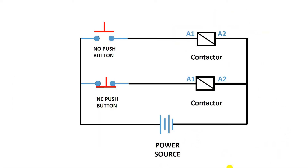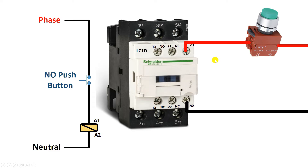Now let's move forward. In the last class, I told you that through this push button we turn on and off the contactor. Now I didn't tell you what happens in the contactor when a NO push button is connected, or what happens when an NC push button is connected. To explain this, first I will connect this contactor through a NO push button. For this connection, I made a symbol here. At A2 terminal of this contactor, neutral power supply is directly connected.